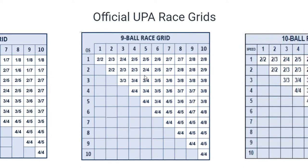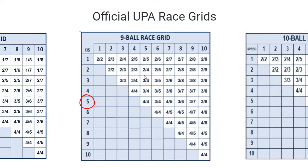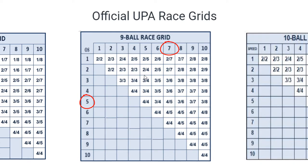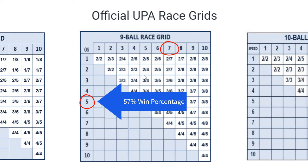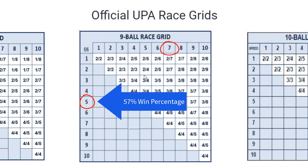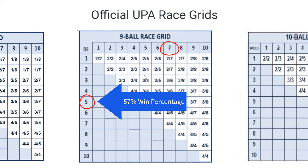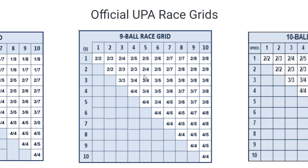To give you an example, when a 5 plays a 7 in 9 ball, the 5 nationwide is winning 57% of the time. So that race, we really can't make it much better than that.